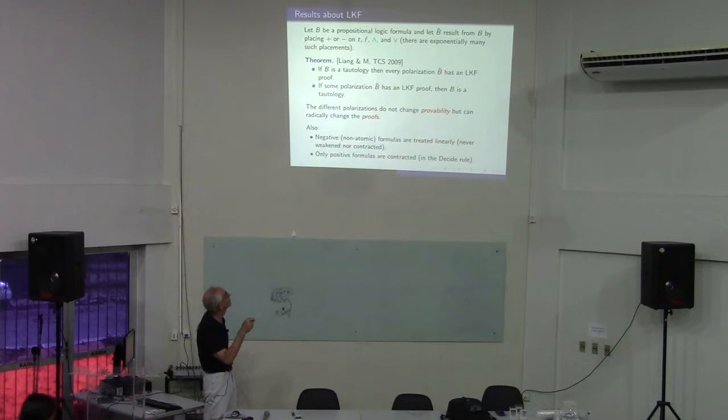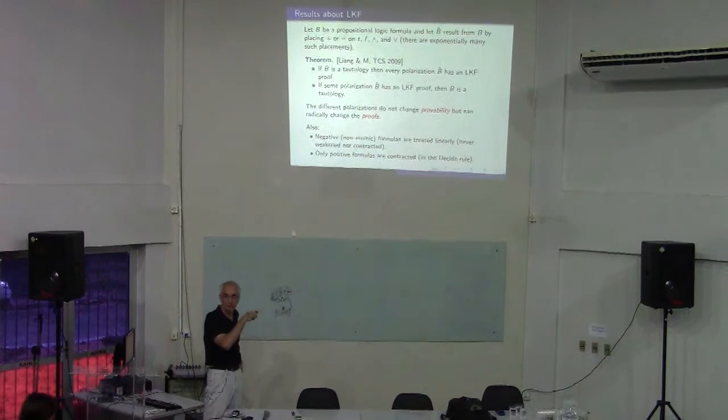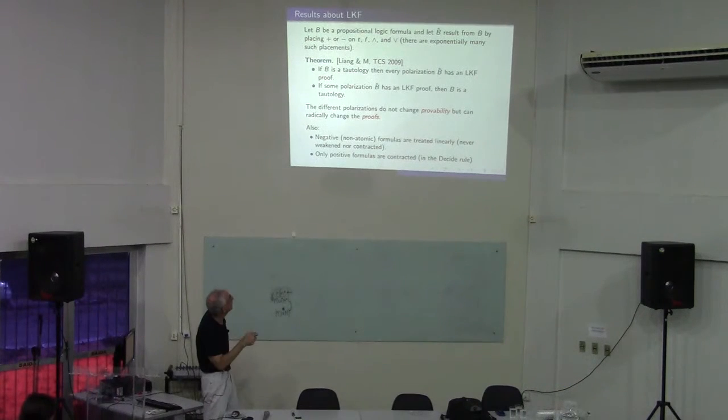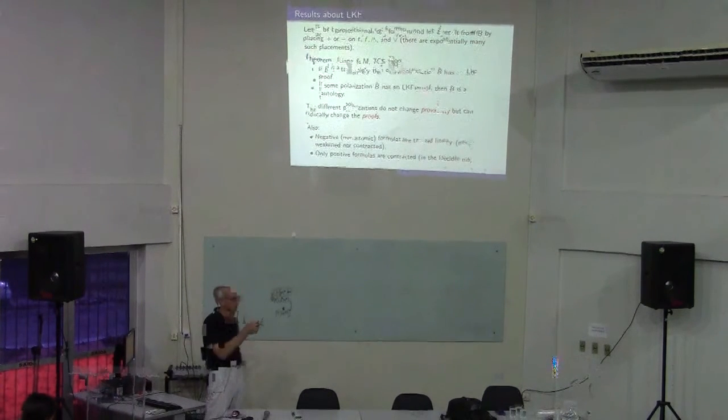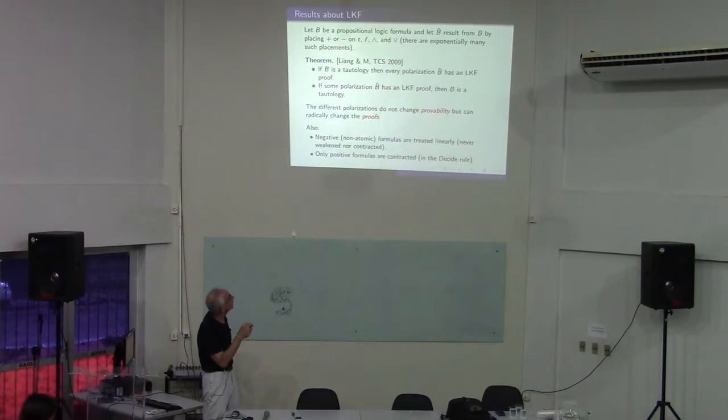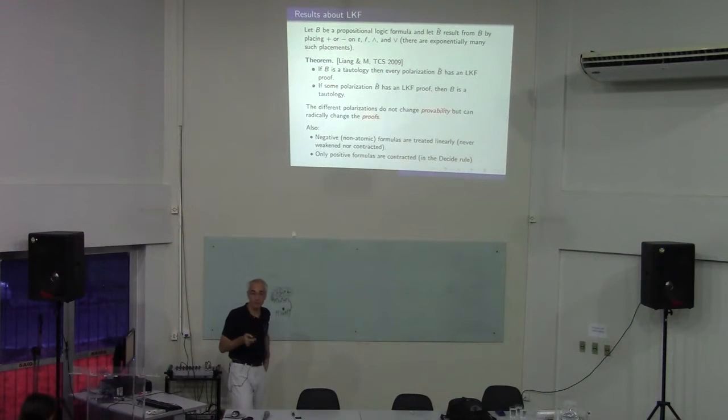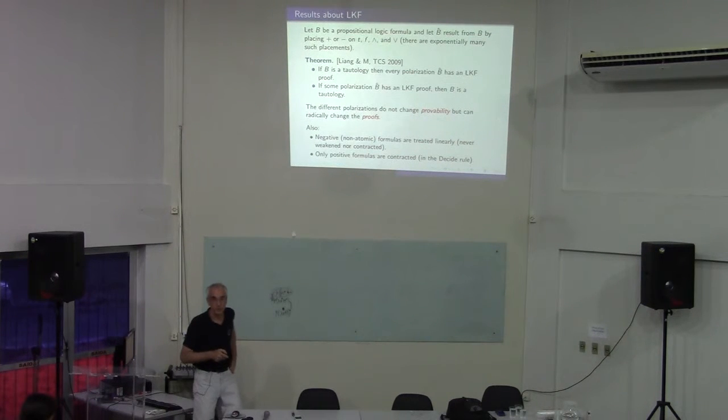If some polarization has an LKF proof, then if I can prove it for any one of the polarizations, then the original B is a tautology and hence every polarization is provable. If one is provable, so is every other. Strong completeness result there. This doesn't really have much to do with provability but about proof.